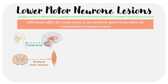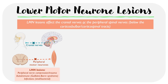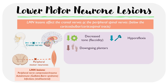Examples of lower motor neuron lesions can include nerve compression or trauma, autoimmune conditions, or infections. These lesions lead to a different array of symptoms compared with upper motor neuron lesions. Initially they can be thought to cause the reverse symptoms of upper motor neuron lesions — so for example we'd get decreased tone or flaccidity, hyporeflexia, and downgoing plantars.